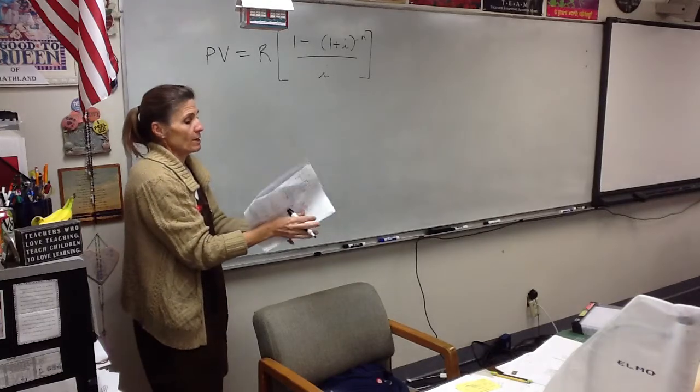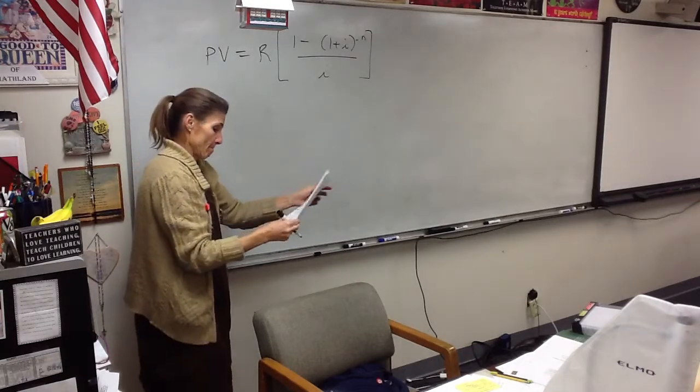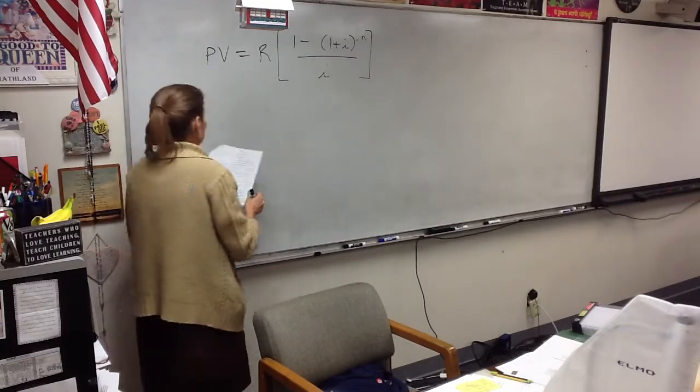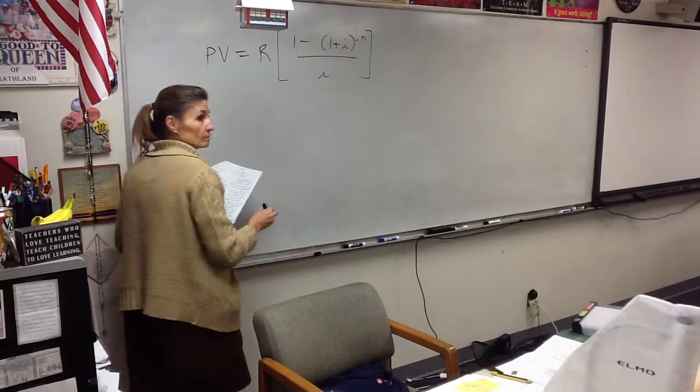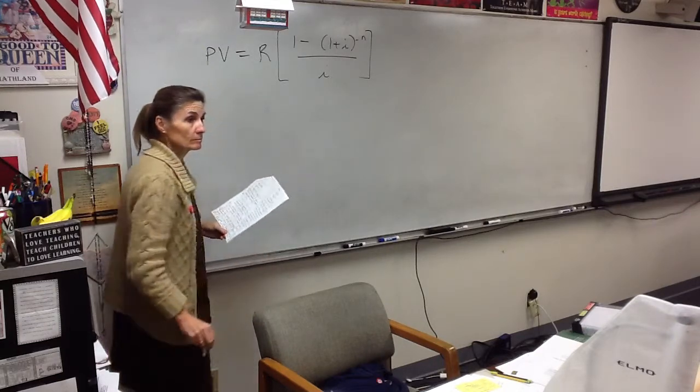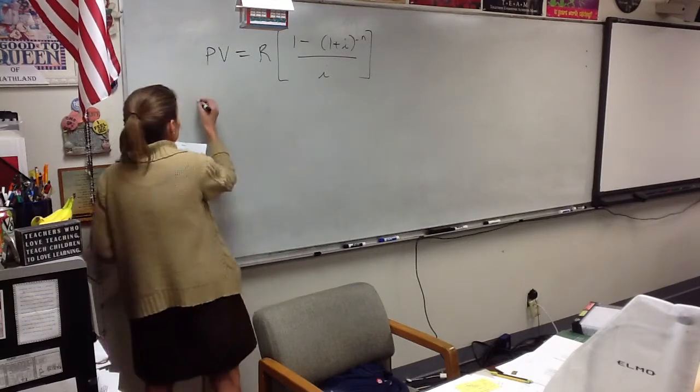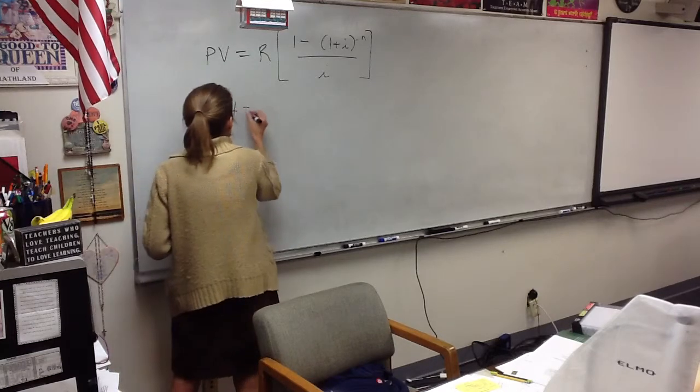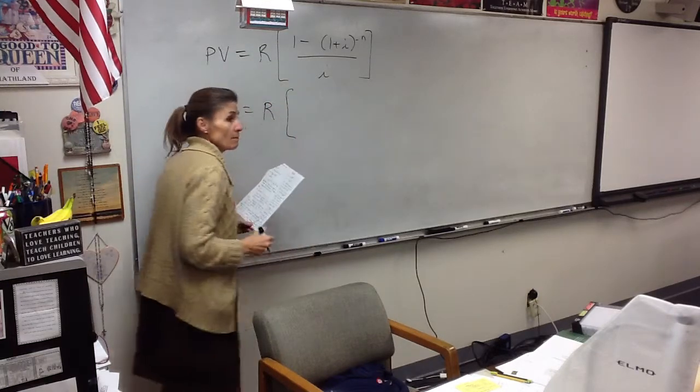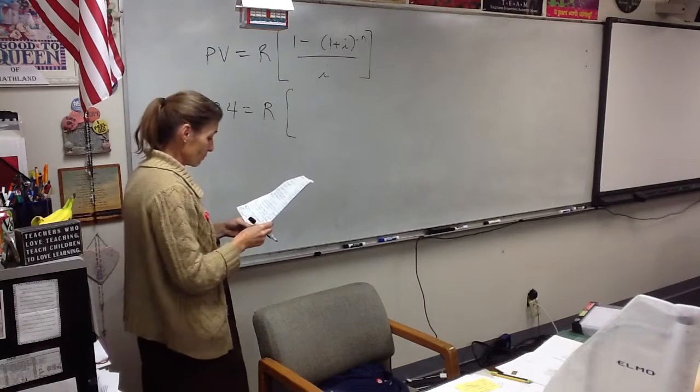Now, what am I going to put in where here? I gave up on it, actually. Your credit card balance is 1,234. So, PV is 1,234. R is what I'm looking for. That's the payment amount. That's what I'm looking for.